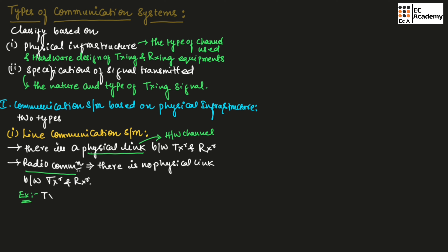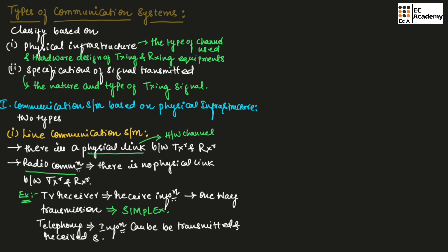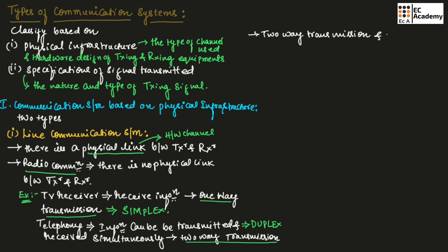For example, if we consider a TV receiver, it can only receive information. That is why it is known as one-way transmission, and such systems are known as simplex systems. If we consider telephone communication, information can be transmitted and received simultaneously — this is two-way transmission, and these systems are referred to as duplex systems. If two-way transmission takes place but not simultaneously, such systems are referred to as half-duplex systems.